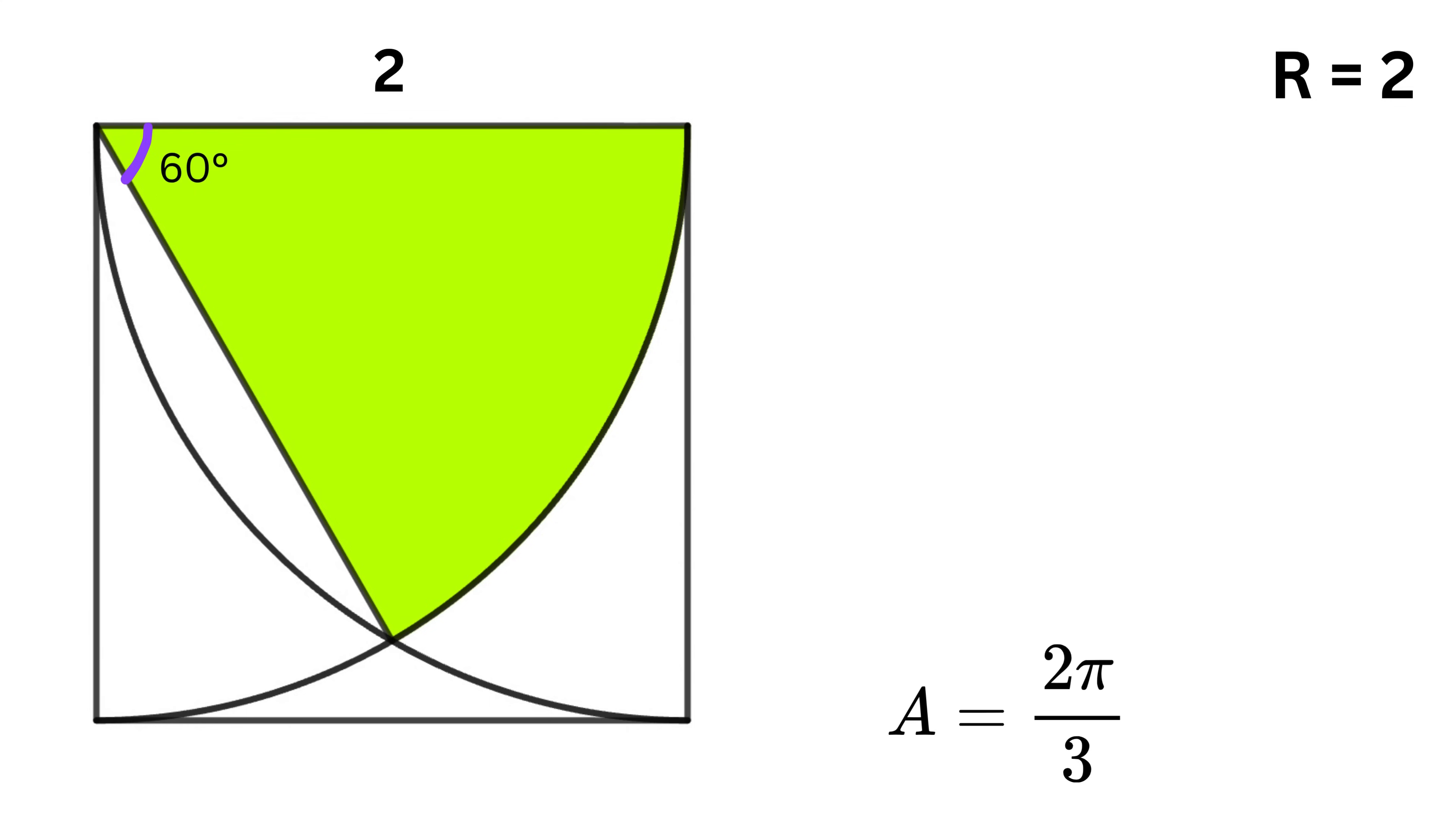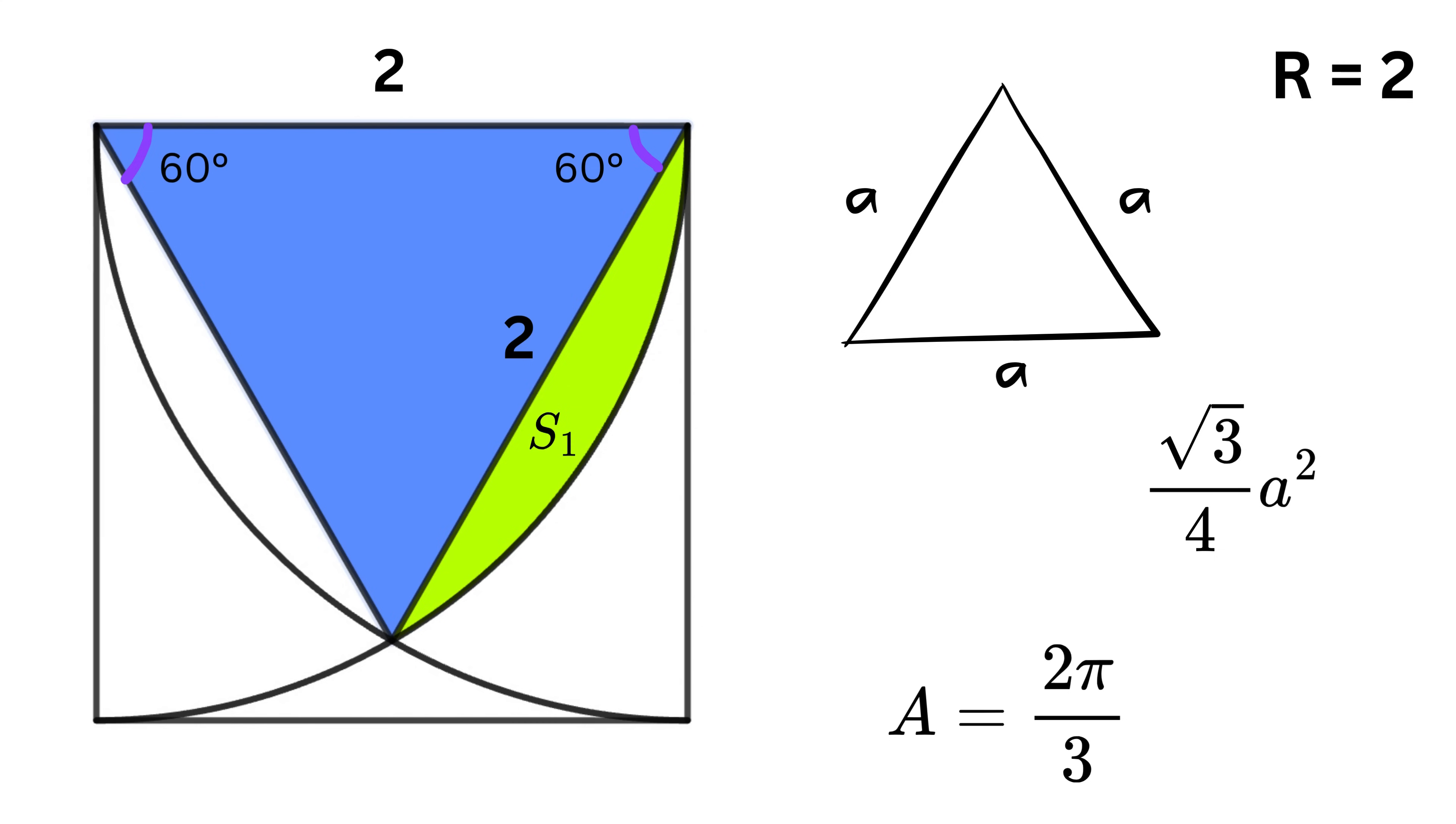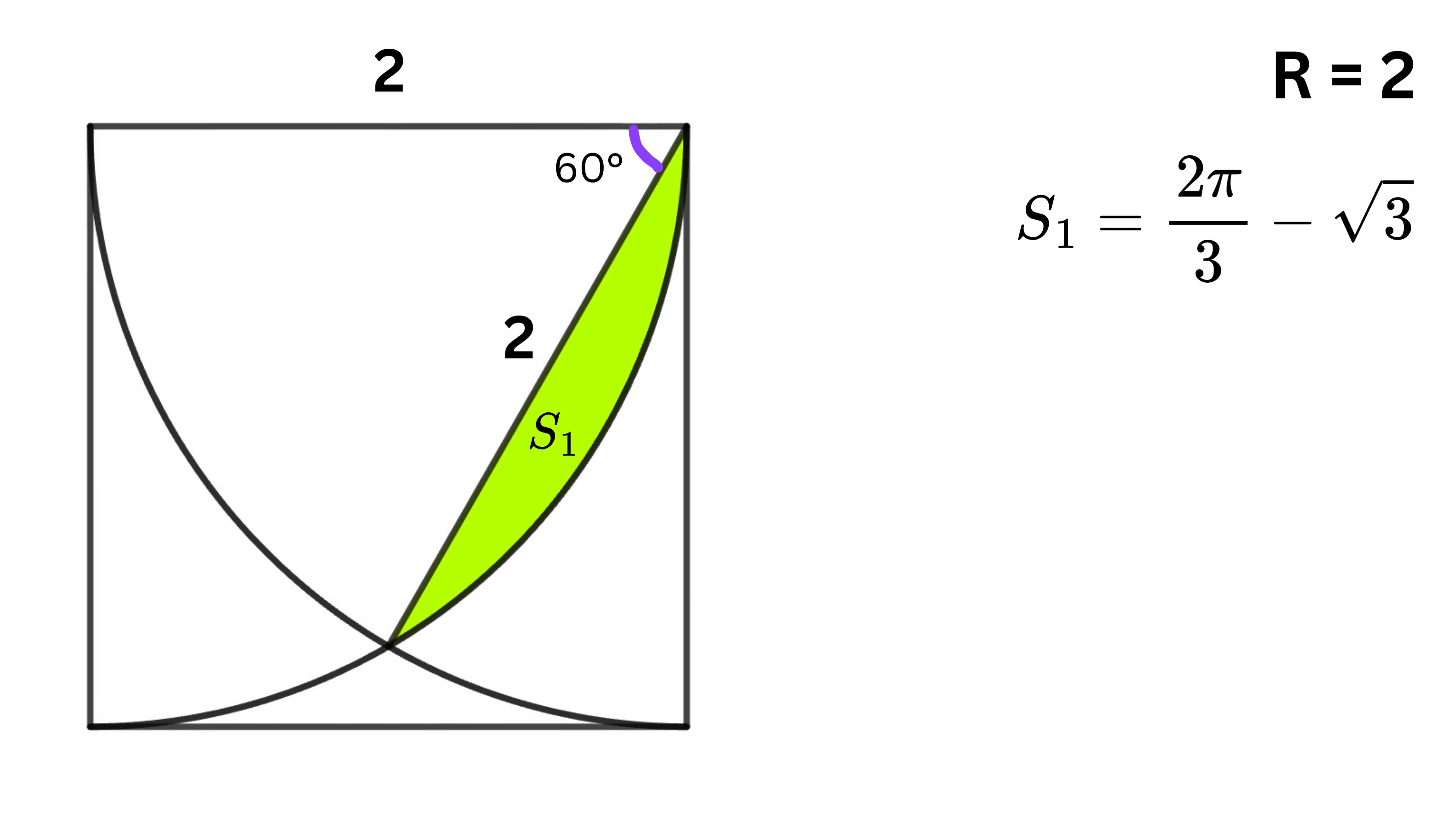Then, the formula for the area of an equilateral triangle with side length a is √3/4 times a². Our side length a is 2, so 2² is 4, and the fours cancel out. Therefore, the area of the equilateral triangle is simply √3. So now s1 is equal to 2π/3 minus √3. Awesome!